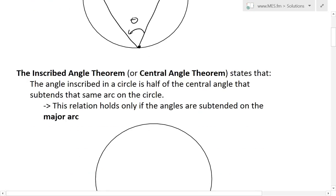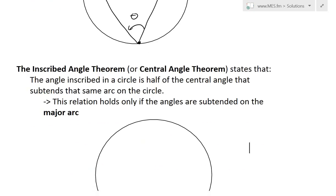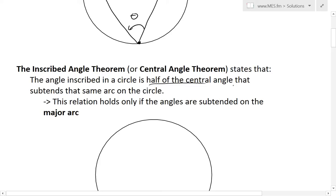Now let's get to the inscribed angle theorem, also called the central angle theorem. Basically, it states that the angle inscribed in a circle is half of the central angle that subtends that same arc on the circle.